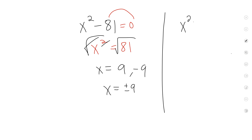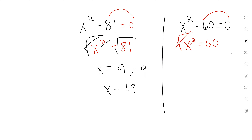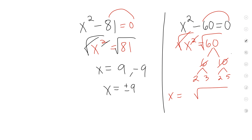Let's say we didn't have a perfect square. You should have moved this over so that x² equals 60. We don't know what the square root of 60 is, so we're going to break it down: 6 times 10, 2 times 3, 2 times 5. So x equals the square root of 2 times 3 times 2 times 5. Here's a pair of 2's — cross it out, one goes outside. So your answer is plus or minus 2 square root of 15.